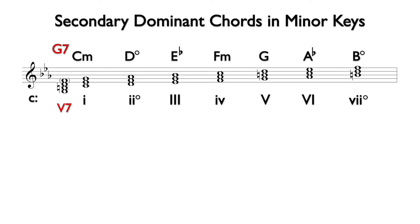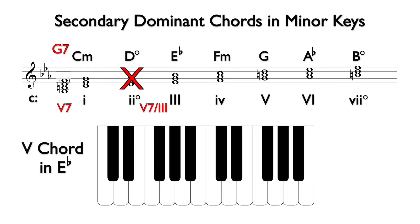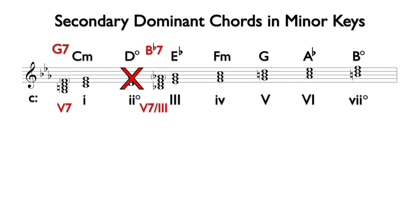Since the 2 chord in a minor key is typically diminished, we will not include 5 of 2. We will start with 5 or 5-7 of 3. With 3 being E-flat, we find the 5 chord in E-flat, which is the interval of a perfect 5th above E-flat. This is B-flat or B-flat 7, and the notes are B-flat, D, and F for the triad, with A-flat added for the 7th. This is the only secondary dominant chord we will encounter that does not have an accidental. Since it functions to pull over to the 3 chord and temporarily make it feel like 1, we will analyze it as 5 or 5-7 of 3, when it is followed by 3.